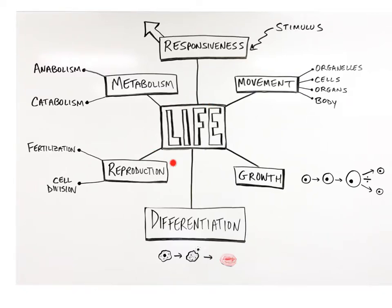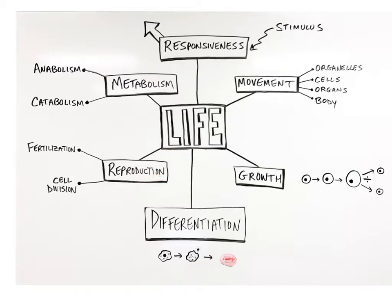Living things are different from non-living things in many ways. We can identify six of the most important life processes found in the human body that are not found in non-living things. These processes are metabolism, responsiveness, movement, growth, differentiation, and reproduction.